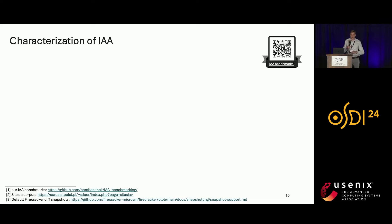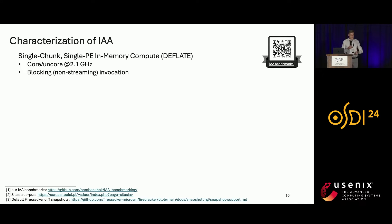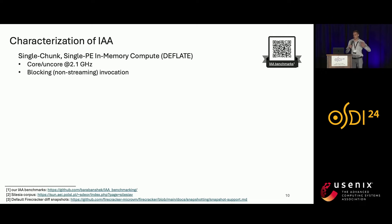As part of this work, we developed a set of micro benchmarks to understand the performance implications of IAA on compressing memory pages and snapshots — these are open-sourced and available via the link shown. Currently, IAA implements deflate compression. There is nothing specific about using deflate for snapshot compression; other algorithms such as Snappy, LZ4, and ZStandard could potentially be integrated in the same way in the future.